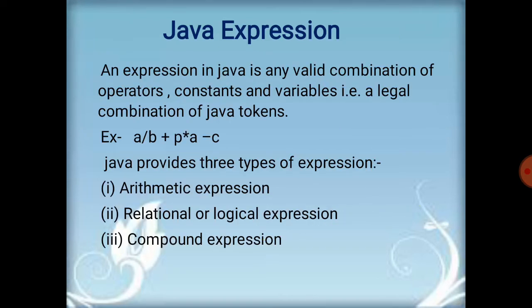The next topic is Java expressions. An expression in Java is any valid combination of operators, constants, and variables — that is, a legal combination of Java tokens. For example, a plus b, or a divided by b plus p into a minus c. Here, a, b, and p are variables; plus, minus, multiply, and divide are operators; and sometimes you can use constants like 2 or 3 inside the expression. So, a Java expression is the combination of operators, constants, and variables.